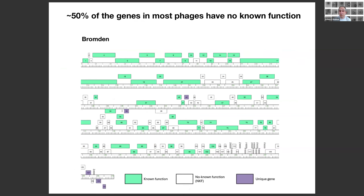To highlight why this is such an issue, here is another phage we've worked on, phage Bromden. As I mentioned earlier, about 50% of the genes in most phages have unknown function. In green are all the genes that have known function, and in white are all the genes with unknown function. In Bromden, there are also five genes considered unique — the only example of these genes found in the entire database. All genes with unknown function are annotated as NKF, or no known function.